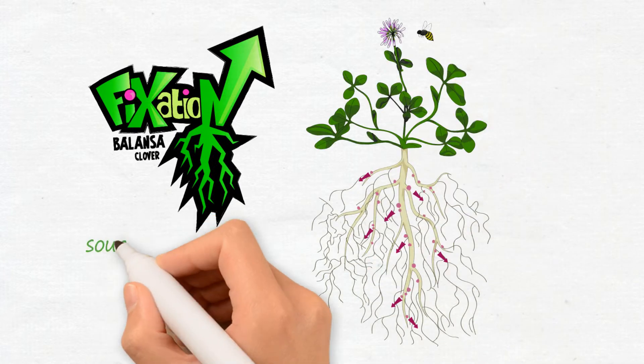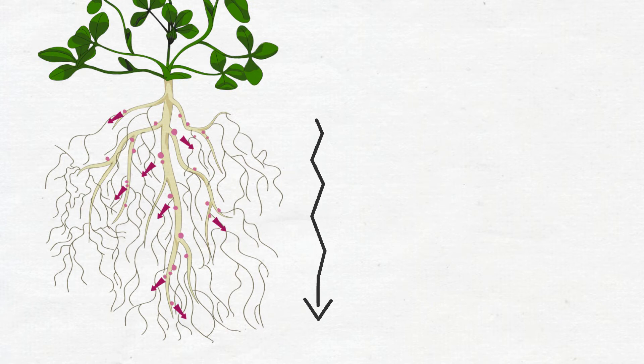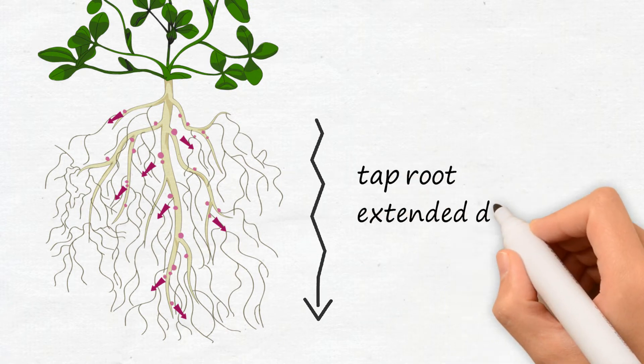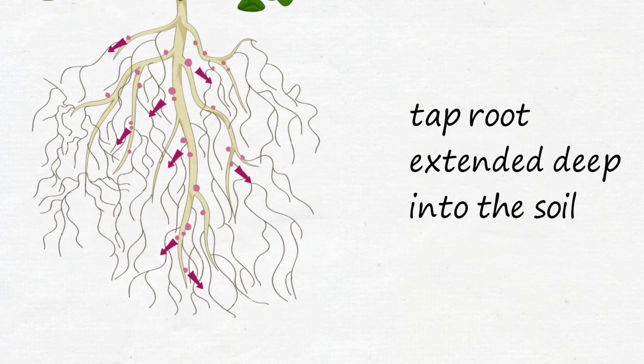Cover crops like Fixation Balansa Clover can be an important source of nutrients for the following crops. Fixation Clover extends a taproot deep into the soil in the fall, even though it might not look like it's doing much above ground.